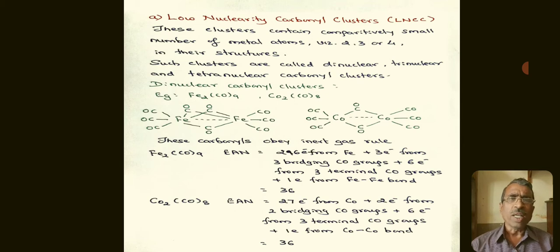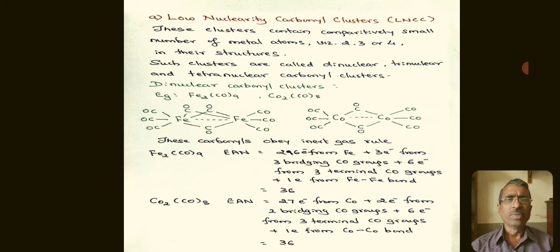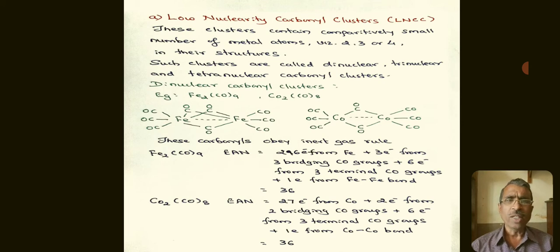Coming to the dinuclear carbonyl clusters, examples are di-iron nonacarbonyl or di-cobalt octacarbonyl. These carbonyls obey the inert gas rule, and hence these carbonyls are stable.